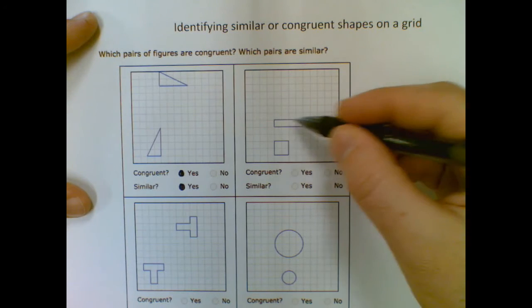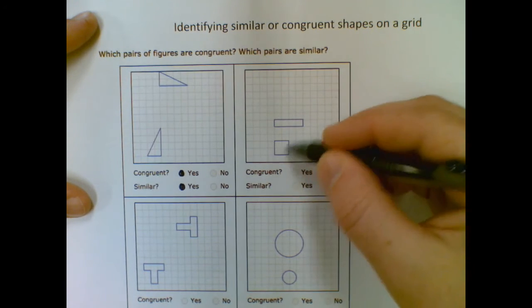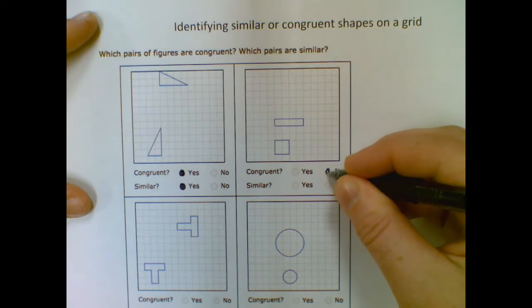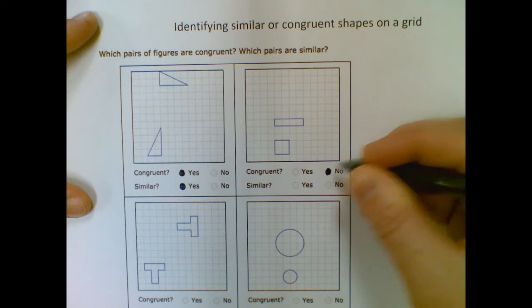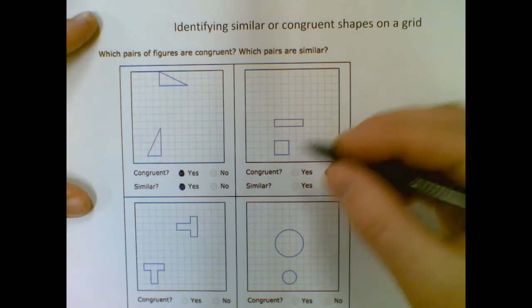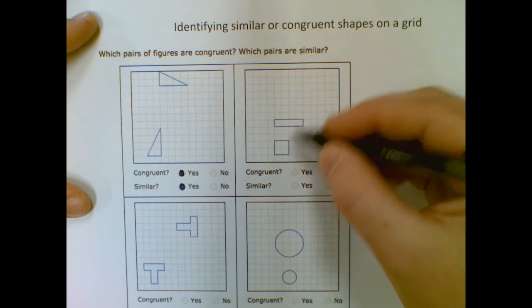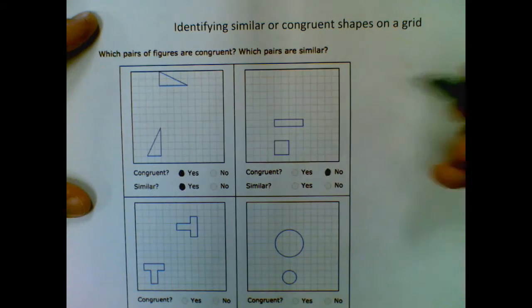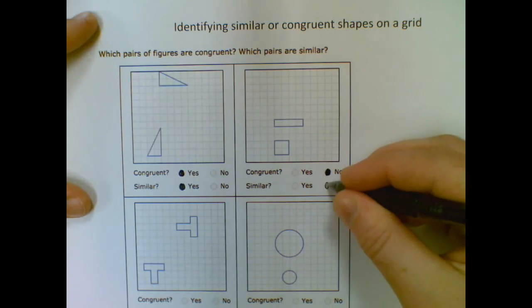These are not congruent, it's a one by four rectangle, this is a two by two rectangle. So the question is, are they similar? And the answer is no. Because in order for them to be similar, that means that they're exactly the same shape, but different sizes. And these aren't even the same shape, so they're not similar either.